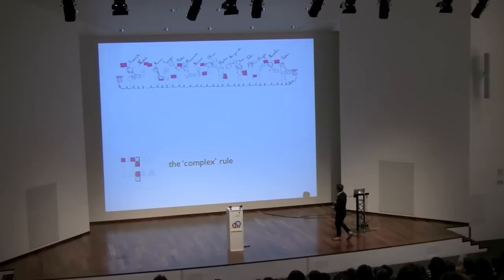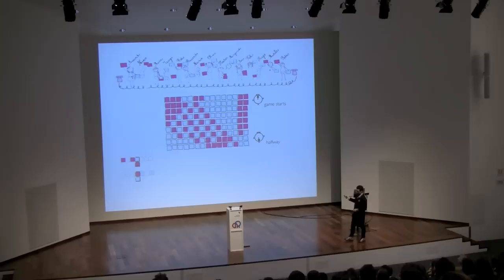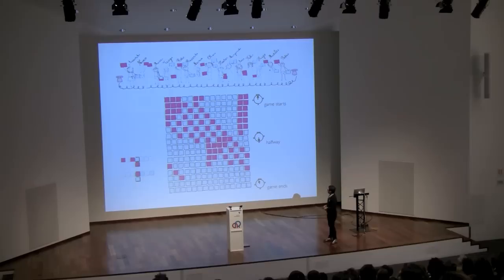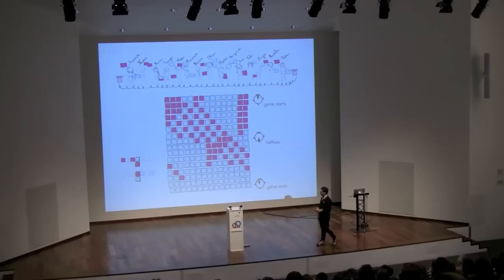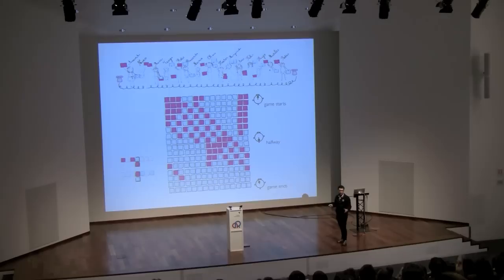If we go back to the initial arrangement and allow them to follow that rule one time, this is what the network looks like after one turn of the game. If we allow the game to unfold, we see three different mesoscopic patterns emerge — mesoscopic because they are patterns observed in subgroups of kids in the network. We have one pattern that is all pinks, one that is all blues, and this funny checkerboard thing. There is a nice interpretation: the pink means some people believe the majority is pink, the blue means some believe the majority is blue, and the checkerboard in the middle is saying, I don't know what's going on.